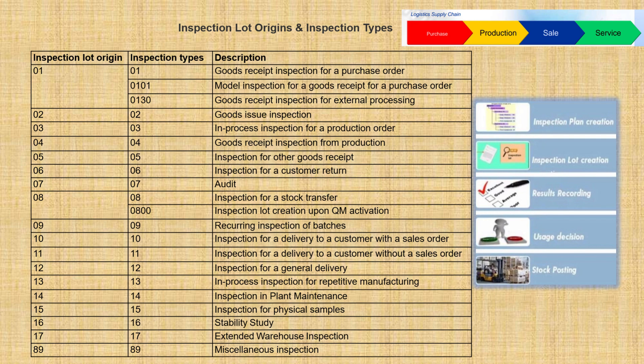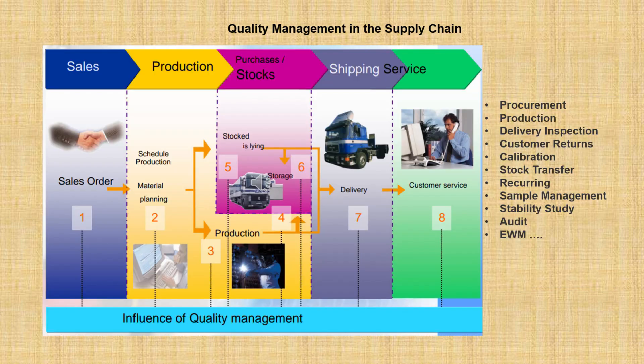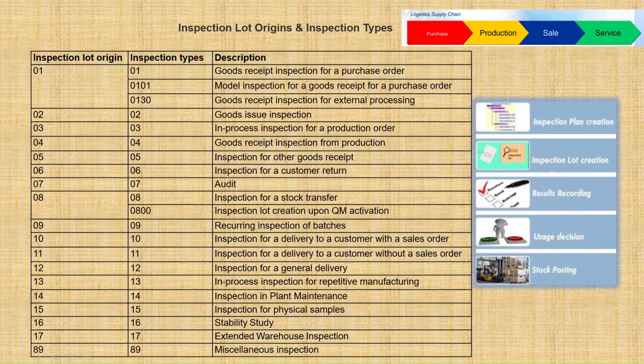The material management department is involved in the integration. Whenever we are purchasing, we are doing the inspection. For incoming inspection of raw material received from vendors, we decide whether the inspection will be at the vendor end or when we receive the goods, or if the inspection is without a purchase order when receiving material from outside.